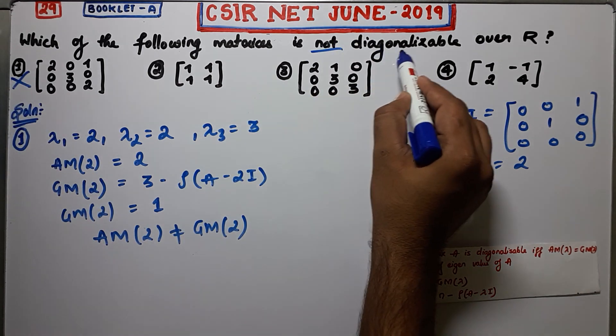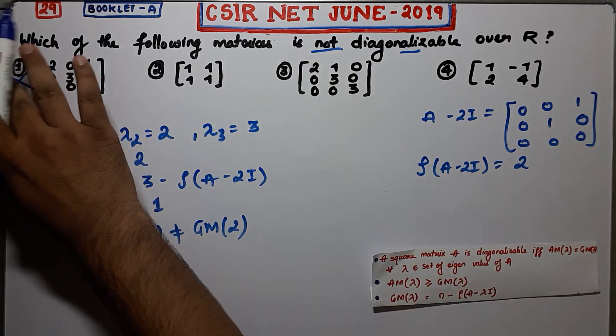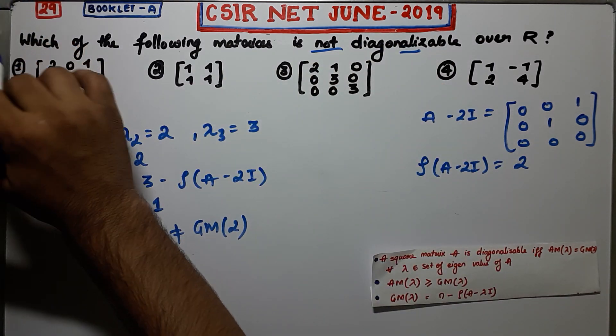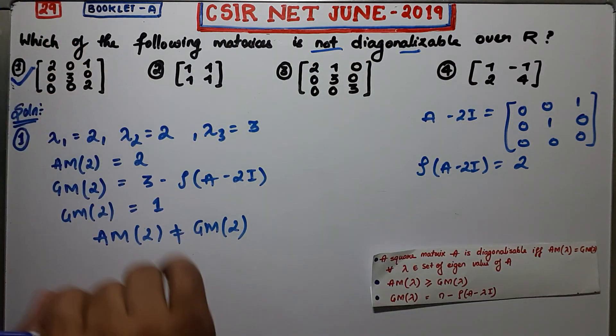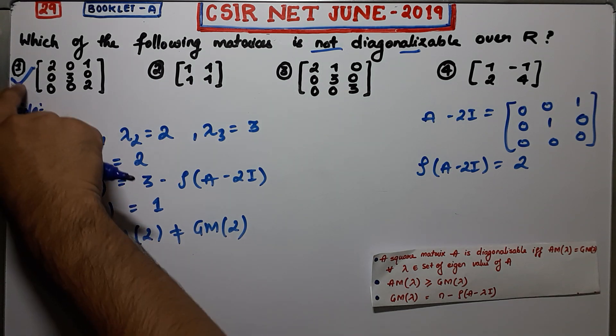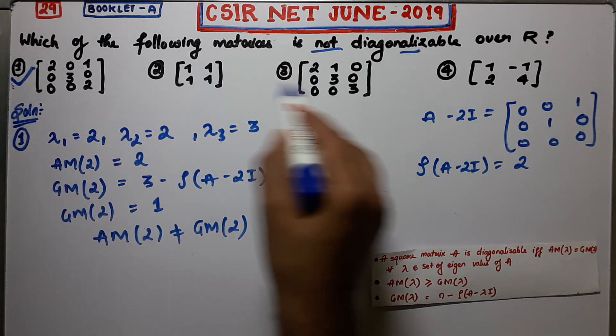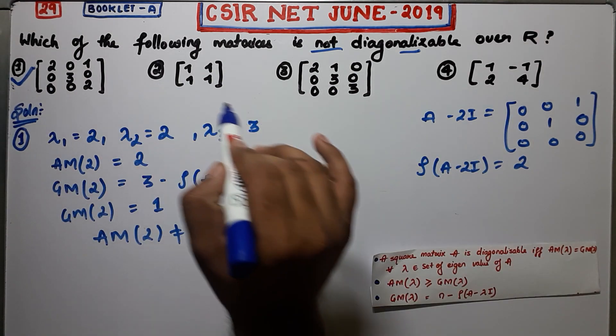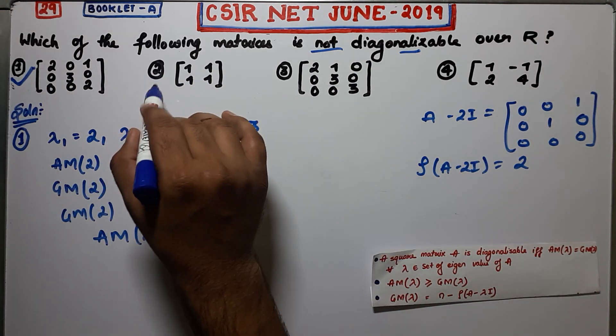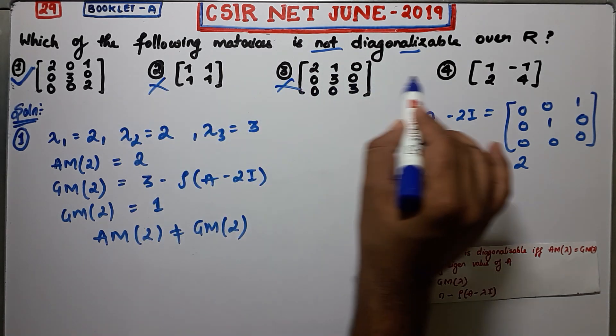So it is not diagonalizable, but what you have to find is the not diagonalizable matrix. That means your option is actually correct. This matrix is not diagonalizable, so this option is correct. Since it is a question of part B, all other options are diagonalizable, meaning they are false.